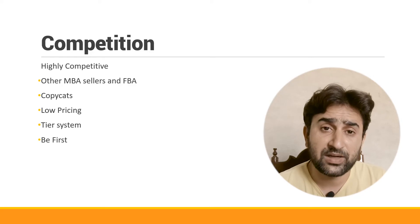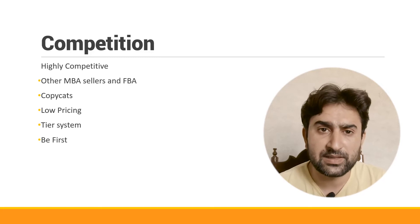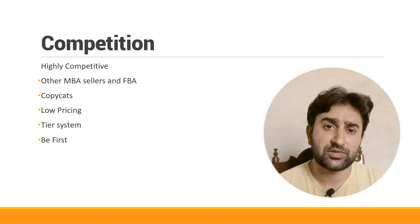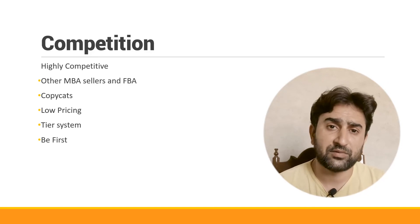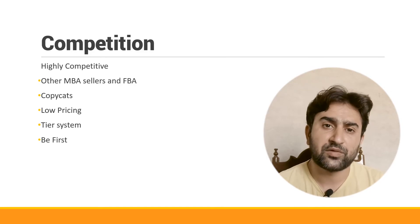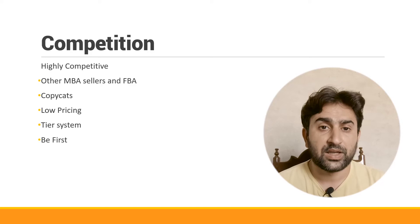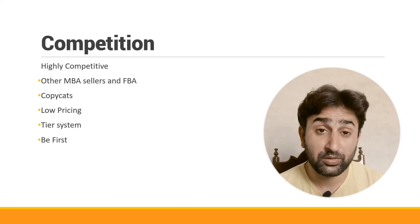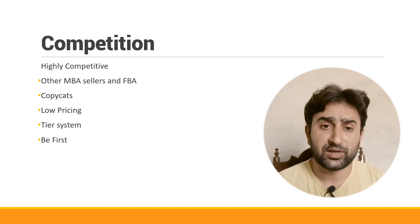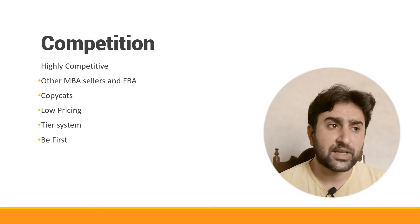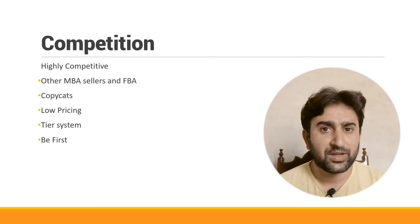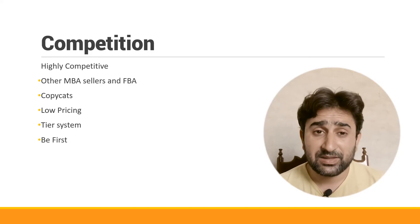There is also a tier system on Merch by Amazon. When you start, you can only submit 10 designs and sell 10 products at one time. To move up tiers — from Tier 10 to 25, then 100, 500, 1000, and so on — you need to make a number of sales equal to your current tier. This is really difficult for new sellers and is one of the main drawbacks, especially early on.